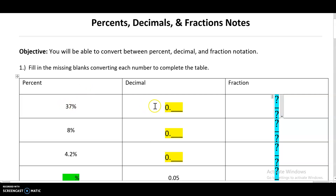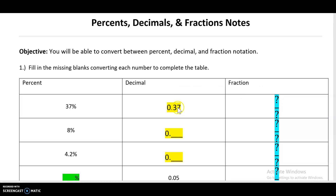Starting with 37%. This may be familiar, but 37% as a decimal is 0.37. What you may not know is why. When you look at a percent or decimal, you have to look at it in certain places — like the tens, ones, hundreds. So looking at this decimal, the 3 is in the tens place, the 7 is in the hundreds. The 3 being in the tens place means we have three tens, or 30, and then the 7 tells us 37%.